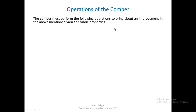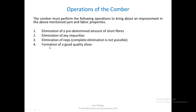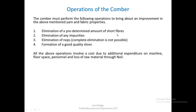Let us see the operations of the Comber. The Comber must perform the following operations to bring about an improvement in yarn or fabric. First, it needs to eliminate a predetermined amount of short fibers. Then it must also eliminate impurities if they have been able to reach the Comber stage, which should normally not happen. It should also eliminate neps, although complete elimination of neps is not really possible. The Comber should also give a good quality sliver. Of these four functions, removal of short fibers is the most important one.